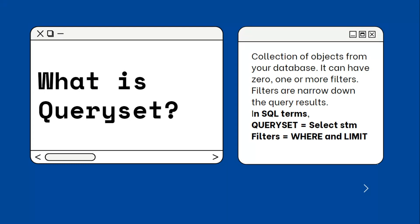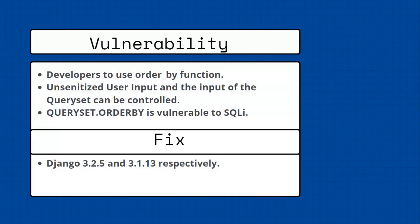You can think of a QuerySet as equivalent to the SELECT statement where filters map to WHERE and LIMIT clauses. The vulnerability requires the developer to use the order_by function. QuerySet has a function called order_by — QuerySet.order_by — used on the backend side. The input of the QuerySet can be controlled, meaning QuerySet.order_by leads to SQL injection. In other words, it happens because of unsanitized user input.